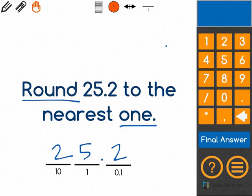As you can see, we're supposed to round to the nearest one. So this is the digit that we round to. When we round, we look at the place to the right of that digit.